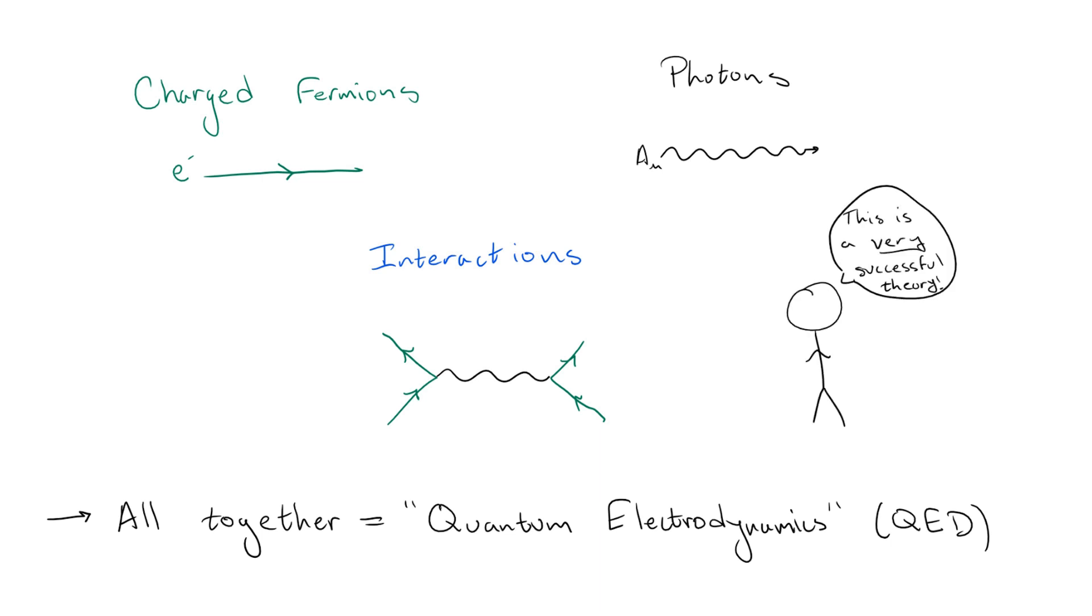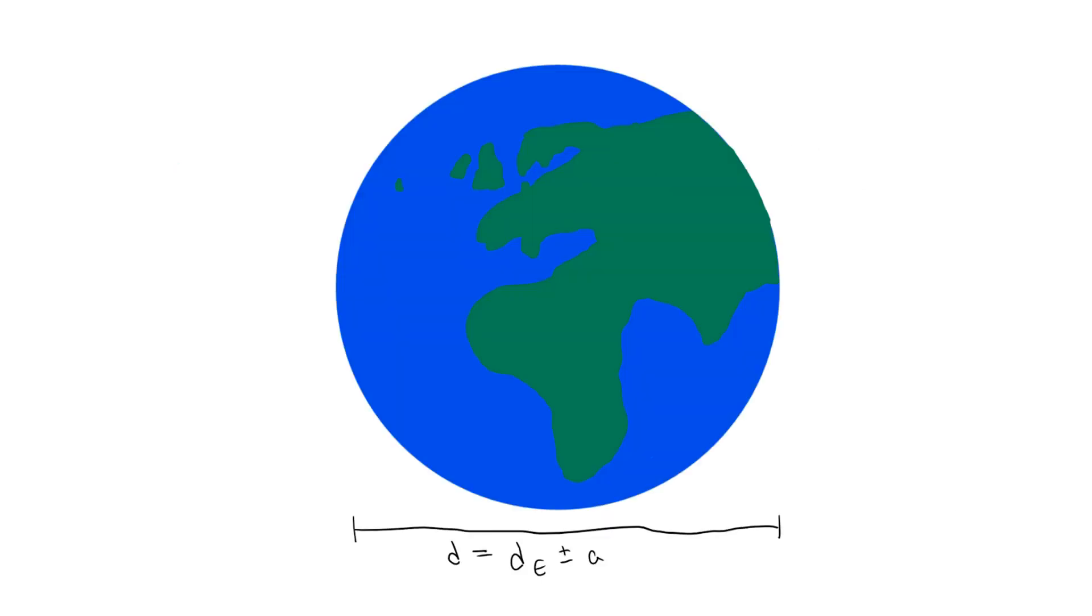In fact, QED boasts the most accurately predicted value in the entire history of physics, that of the anomalous magnetic dipole moment of the electron, which agrees with experiment to roughly one part in a billion. To put this into perspective, this would be like predicting the diameter of the entire earth and being correct within a centimeter or so. So, saying QED is an impressive theory is quite an understatement.